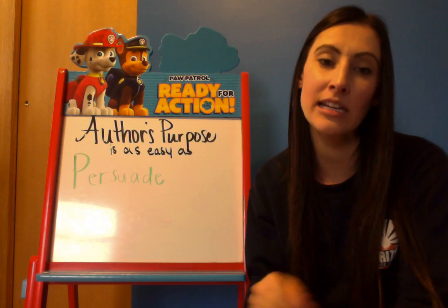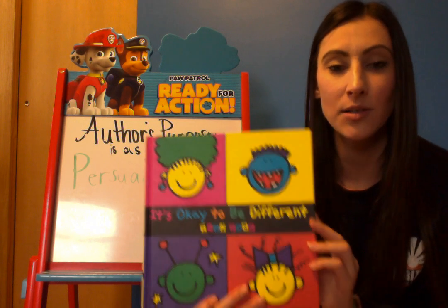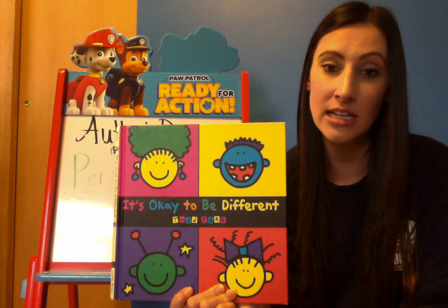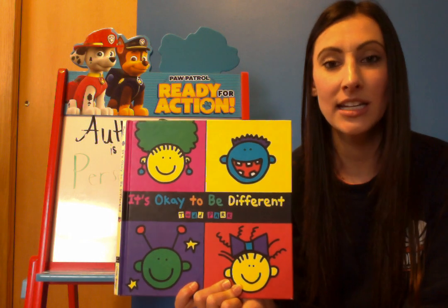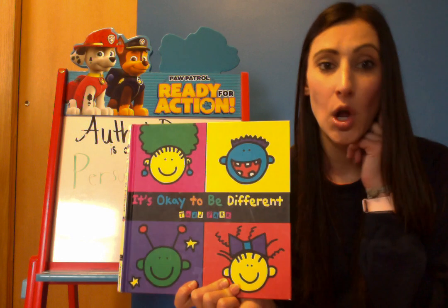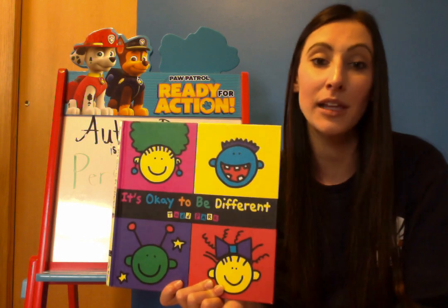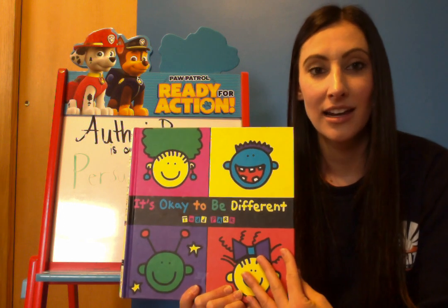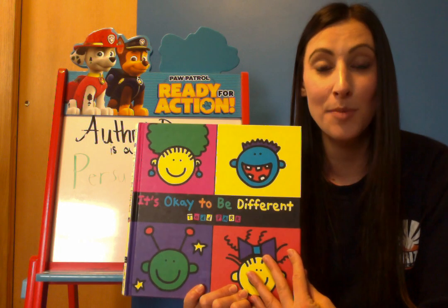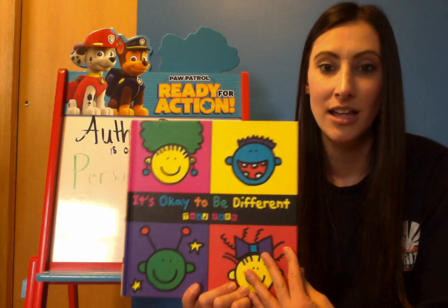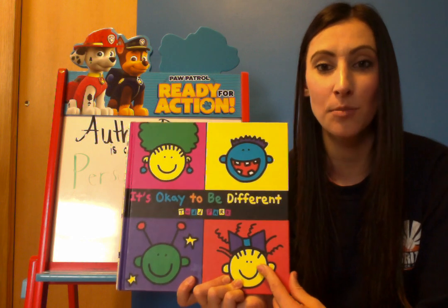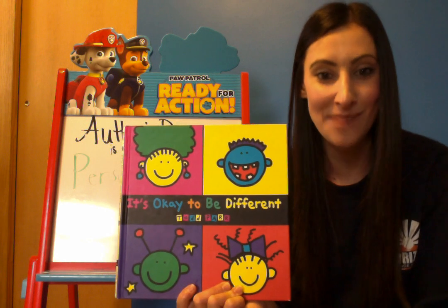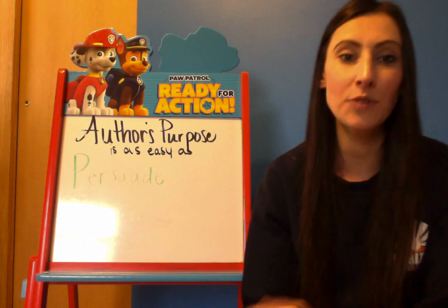Our last book is always tricky — P is always tricky. This one is called 'It's Okay to Be Different.' It could be entertain, but it's definitely a persuade. It's going to change your thinking, because we're all born different, we all look different, we all have different abilities, skills, and talents. This book teaches children that being different is not a bad thing. It's definitely a P — it's going to persuade you to change your thinking: hey, it is okay that I'm different.